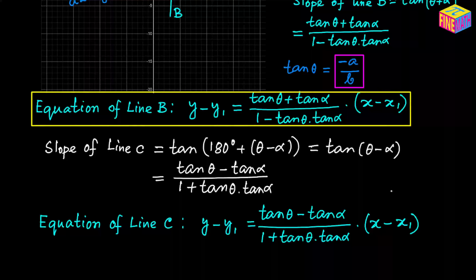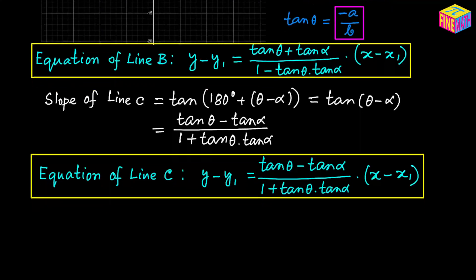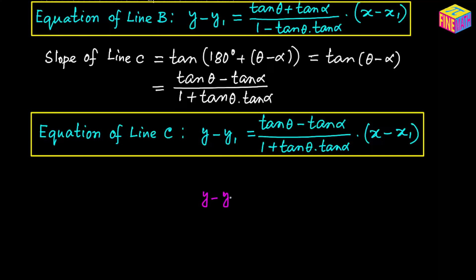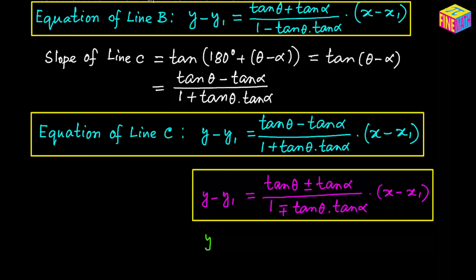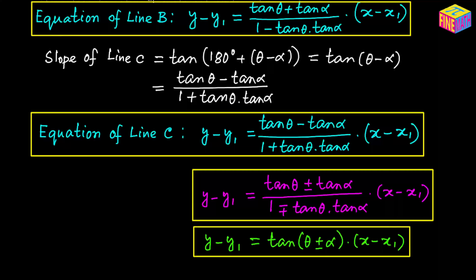Using the point-slope form with the given point (x₁, y₁), the two equations can be written in a combined form: y − y₁ = [(tan θ ± tan α) / (1 ∓ tan θ · tan α)] · (x − x₁), which can also be written as y − y₁ = tan(theta ± alpha) · (x − x₁). These represent the equations of lines b and c, equally inclined with the given line a.